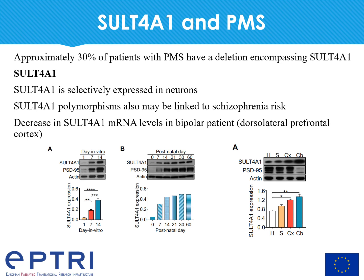We started analyzing the level of SULT4A1 during neuronal maturation both in vitro and in vivo, and found that in both cases SULT4A1 expression increased with a peak around postnatal day 30. Importantly, the level of SULT4A1 remained high also during adulthood, suggesting that SULT4A1 is not important only during neuronal maturation but may also have an important role in neuronal function. We also found that SULT4A1 is highly expressed in hippocampus, striatum, cortex, and cerebellum.